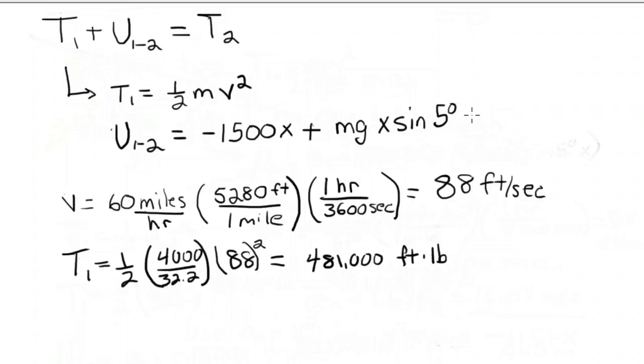Let's go back up here and work on this change in potential energy and work done. Minus 1,500x plus mg. This mg is the weight, so that's 4,000 pounds. So we can multiply these all out, and you get this minus 1,151x.